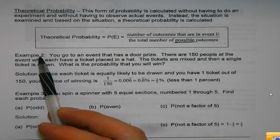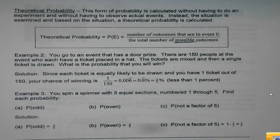So for instance, example two. We've got an event that has a door prize. There's 150 people at the event who each have a ticket placed in a hat. Tickets are mixed and then a single ticket is drawn. What's the probability that you win? Well, unless somebody's doing something screwy, like the tickets are different size, or they freeze one to make it where you can touch it, I don't know.